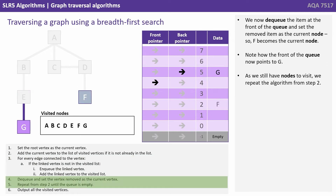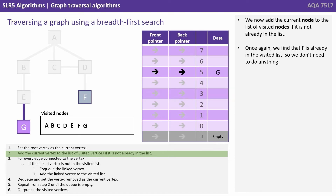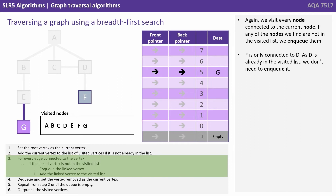We now dequeue the item at the front of the queue and set the removed item as the current node. So F becomes the current node, and now we're pointing to G as the item at the front of the queue. As we still have nodes to visit, we repeat the algorithm from step 2. We add the current node to the list of visited nodes if it's not already in the list. We find F is already in the visited list, so we don't need to do anything. Again, we visit every node connected to the current node, and if any are not in the visited list, we enqueue them. F is only connected to D, and D is already in the visited list, so we don't need to enqueue it.